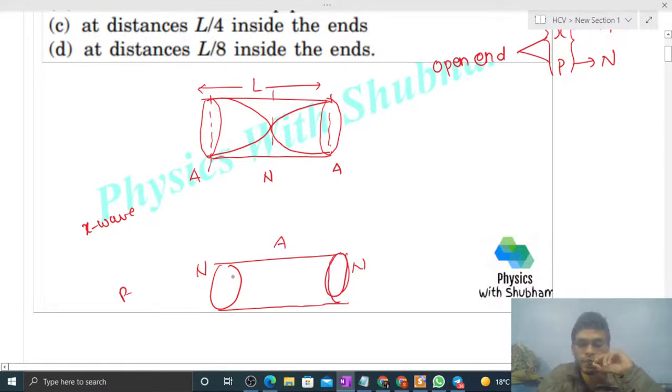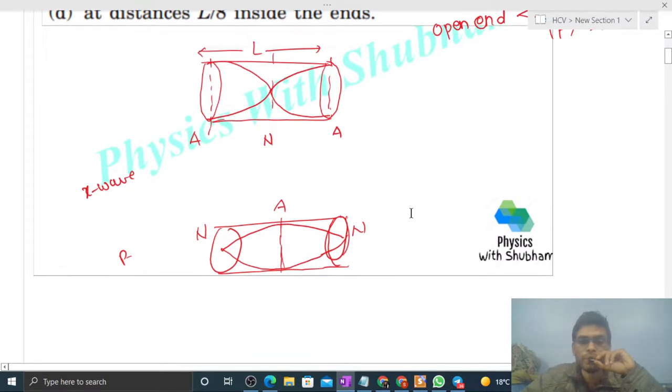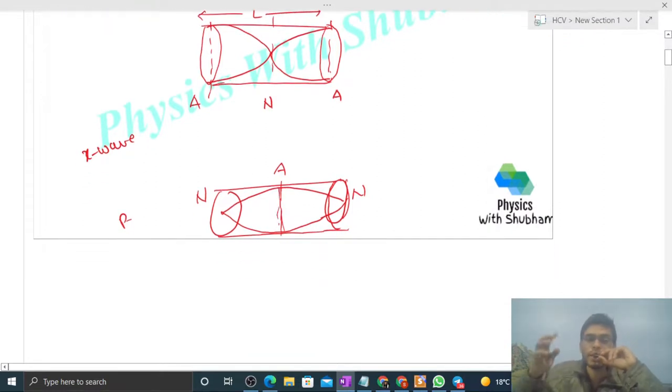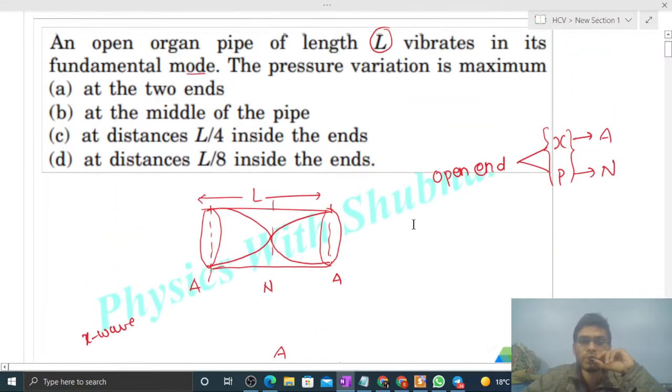So maximum variation of pressure will be where? At the center, at the center of the pipe, because there the amplitude is maximum. That's why the variation of pressure is maximum at the center of the pipe. So I think you have understood.